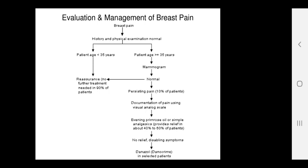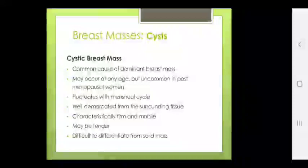Breast mass or cysts are a common cause of dominant breast mass. May occur at any age but uncommon in postmenopausal women. Fluctuates with menstrual cycle. Well demarcated from surrounding tissue. Characteristically firm and mobile. May be tender. Difficult to differentiate from solid mass.